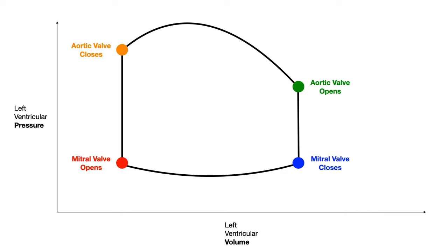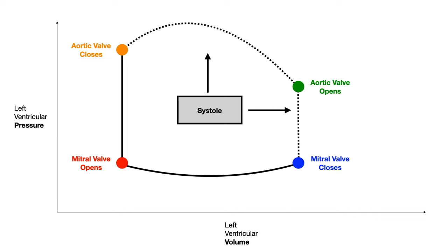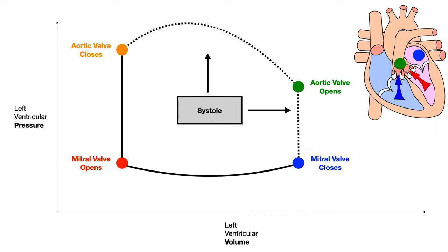I'm going to walk you through how to use your normal understanding of blood flow through the heart to figure out what the green and red points would be on test day. Let's start at the blue point — the blue point is when the mitral valve closes. From the blue point up to the green point and then to the orange point, we're talking about systole. If the mitral valve is closing, the left ventricle is done filling, which means the blue point tells you that you're at the beginning of systole.